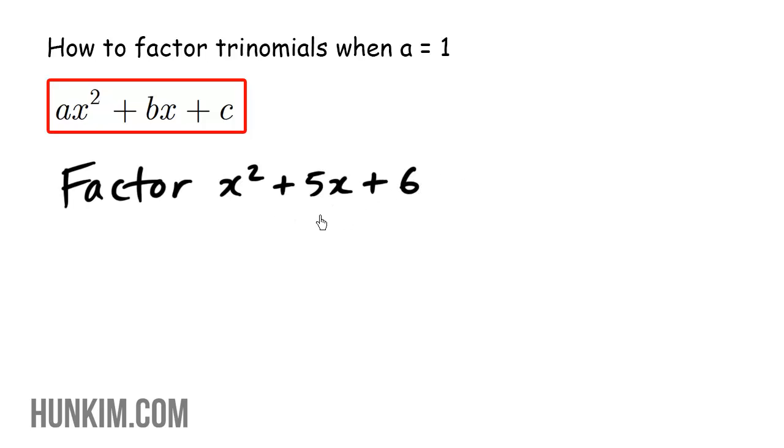We can factor it as follows. When we get a trinomial and this a value is one, it's pretty straightforward. You could try jumping straight to the answer. So the factored form is bracket bracket, leave enough room here. Ask the question: what times what becomes x squared? x times x becomes x squared. So we already solved part of the answer.